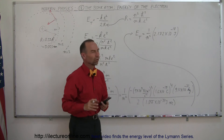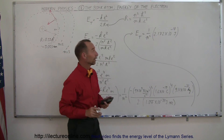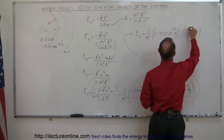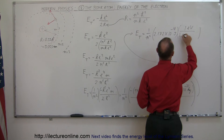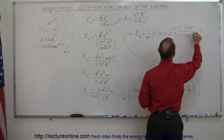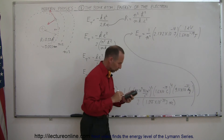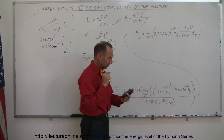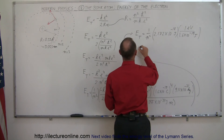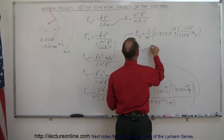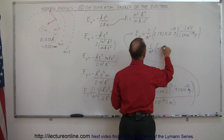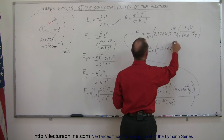Of course, in terms of joules that doesn't mean a whole lot, so let's convert that to electron volts — multiply by one electron volt divided by 1.6 times ten to the minus 19 joules. Dividing by 1.6e-19, the total energy comes out to one over n squared times minus 13.6 electron volts.